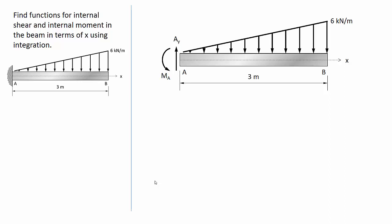The first thing I'm going to do is find these support reactions AY and MA. To find AY, I will sum forces in the Y direction equal to 0. I get that AY is equal to 9 kN in the direction shown.